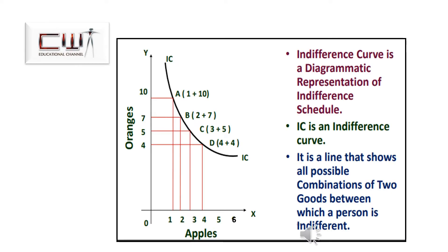This indifference schedule is now represented in a graph, with the number of apples on the x-axis and the number of oranges on the y-axis. IC represents the indifference curve — a line showing all possible combinations of two goods between which the consumer is indifferent. Point A shows ten oranges and one apple; point B shows two apples and seven oranges; point C shows three apples and five oranges; and point D shows four apples and four oranges.